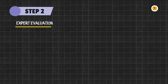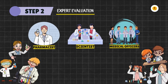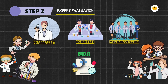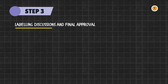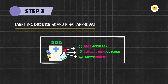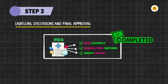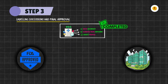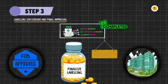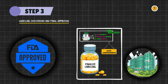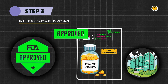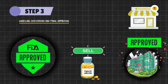The second step is Expert Evaluation. A team of scientists, medical officers, pharmacists, and other experts goes through every detail mentioned in the NDA. This team assesses data accuracy, clinical trial outcomes, and the safety profile of the drug. The third step is Labeling Discussions and Final Approval. If everything in the NDA is appropriate and complete, the FDA and the pharmaceutical company mutually finalize the labeling of the drug to make sure it's clear and comprehensive. After this, the FDA can officially grant approval to the pharmaceutical company to sell the drug in the market.